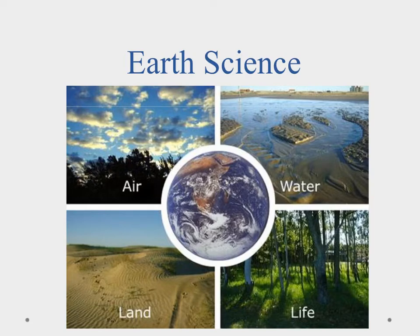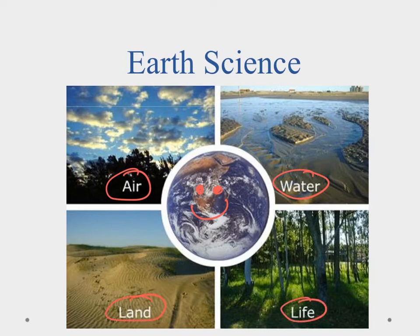When we're talking about earth science, we're talking about studying the earth. The earth is made up of several different things. There's the air, and that study is called meteorology. There's water, which is primarily oceanography, but we can also call it hydrology. We have the study of land in geology, and the study of life, which is biology. That's why we call it a system science. We also look at astronomy to see how the earth fits into the universe.